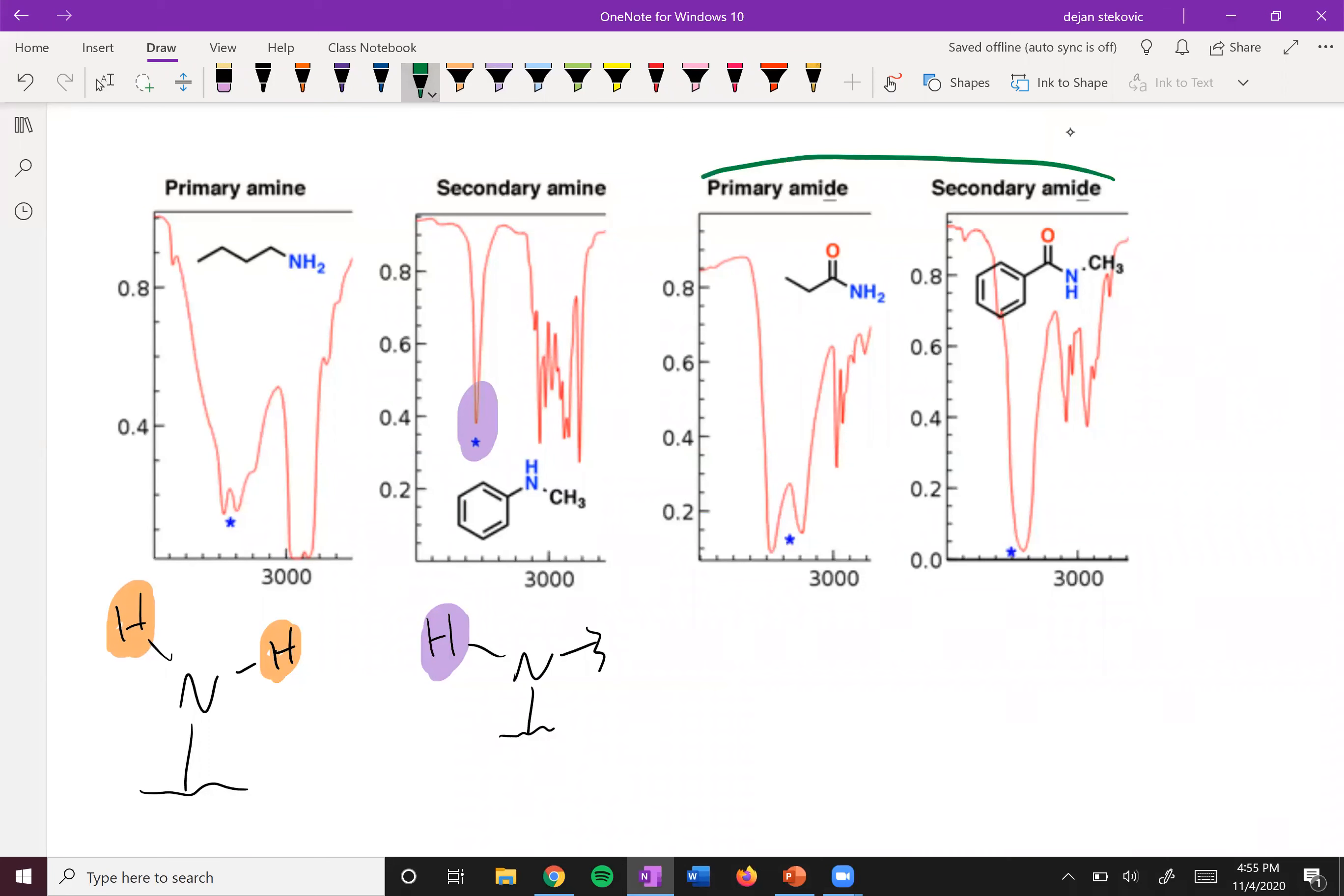Same thing with the amides. If you have something that has two H's on it, you'll see two peaks. If you have one H, you'll see one peak.